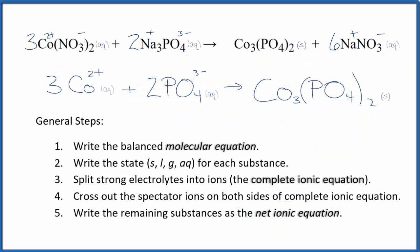So this is the balanced net ionic equation for cobalt-2 nitrate plus sodium phosphate. If you look at this, the atoms, they all balance out. They're the same on both sides. So that would have helped me find that earlier mistake.